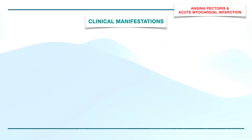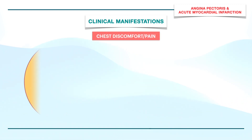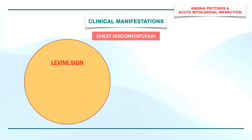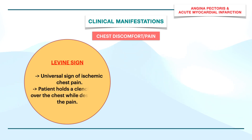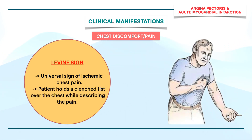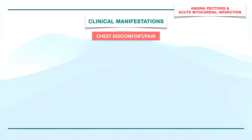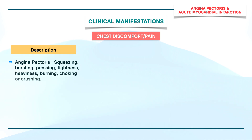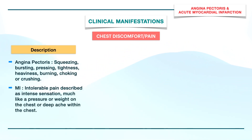Coming to clinical manifestations, both conditions manifest as chest discomfort or pain. There is the Levine sign, a universal sign of ischemic chest pain, wherein the patient holds a clenched fist over the chest while describing the pain. The patient describes anginal pain as squeezing, bursting, pressing, tightness, heaviness, burning, choking, or crushing. In MI, the pain is described as an intolerable, intense sensation much like pressure or weight on the chest, or a deep ache within the chest.